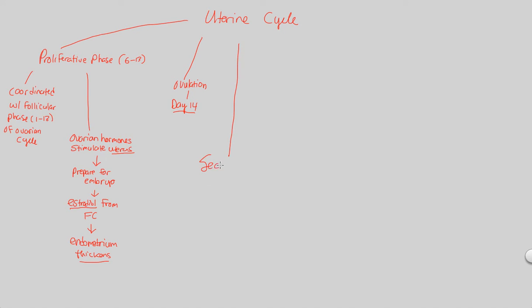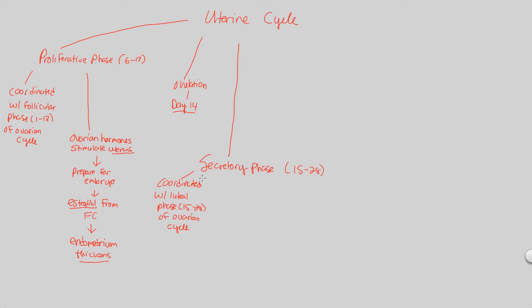Next would be something known as the secretory phase — the next phase of the uterine cycle, from days 15 to 28. We have a perfect alignment here. This secretory phase is coordinated — not separated or independent — but actually working in line with the luteal phase, which was also specifically from days 15 to 28 of the ovarian cycle. These two cycles talk to one another, and let's see the interaction between them in the secretory phase.